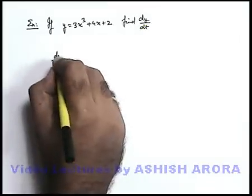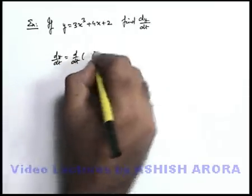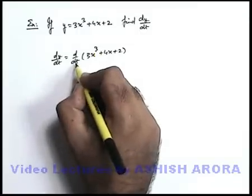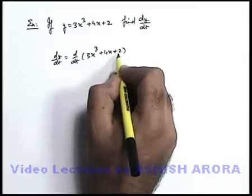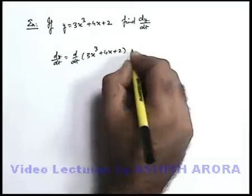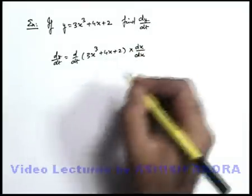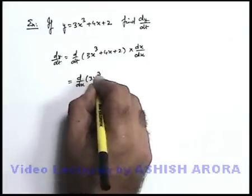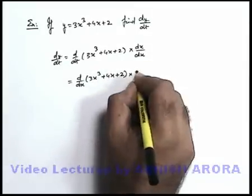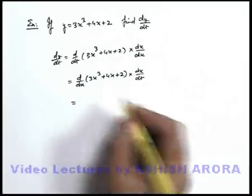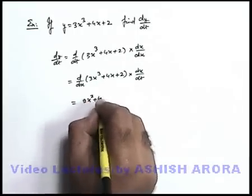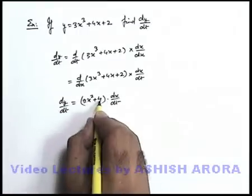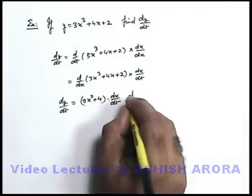By using this expression we can write: dy/dt = d/dt of (3x³ + 4x + 2). But we cannot differentiate it directly with respect to t. In this situation, we can differentiate it with respect to x if we multiply and divide by dx. Rearranging, this becomes d/dx of (3x³ + 4x + 2) multiplied by dx/dt. This can be simply differentiated as (9x² + 4) · (dx/dt). So the value of dy/dt = (9x² + 4) · (dx/dt).